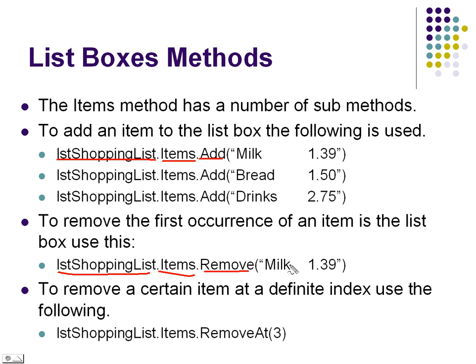Now, sometimes you don't want it to remove the item because it removes the first occurrence. If you have two of these in the list, and you happen to click on the second one, it would remove the first one, not the second one. So sometimes you want to remove it at a specific location. Shopping list is the name of the list, items, remove at, and then this gives you the location. Remember, we're talking about zero based again.